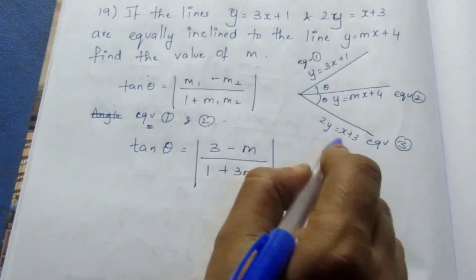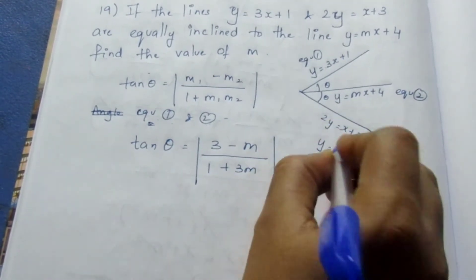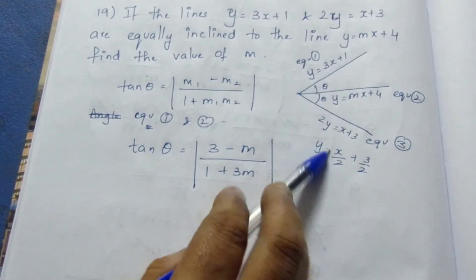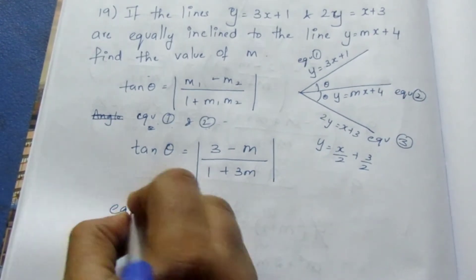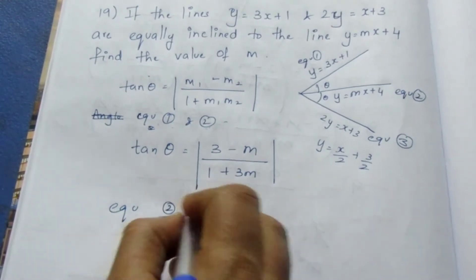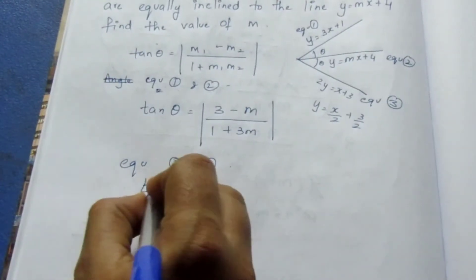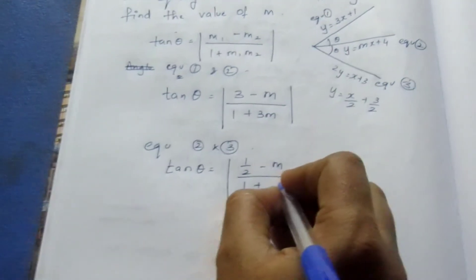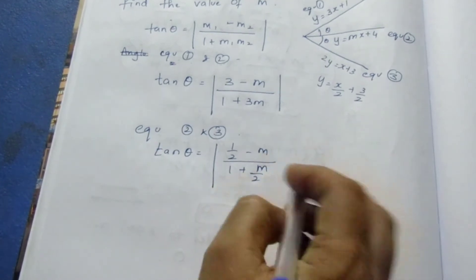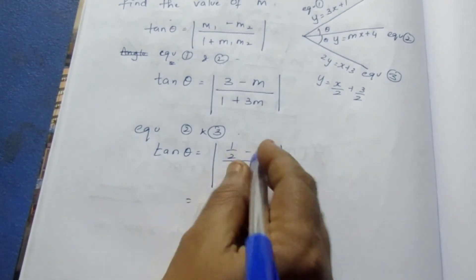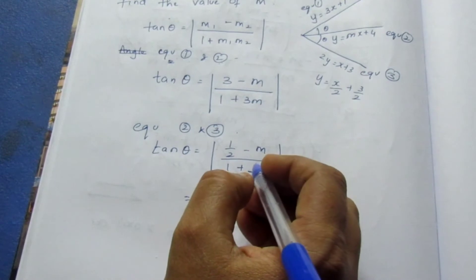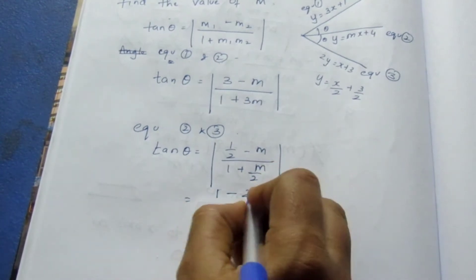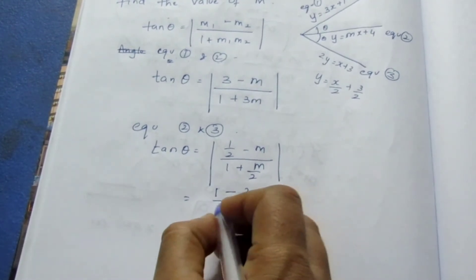For the next two, let me bring the 2 to the other side. So, 2y = x + 3 becomes y = x/2 + 3/2. So the slope will be 1/2. Between equation 2 and equation 3, the slope formula gives tan θ = (1/2 − m) / (1 + (1/2)m), which simplifies to (1 − 2m) / (2 + m).